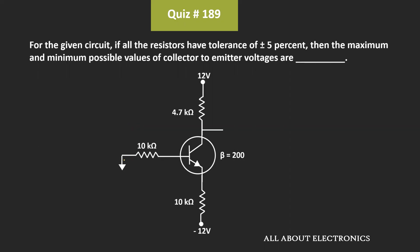Hey friends, welcome to the YouTube channel all about electronics. In this question, we have been given a circuit where all the resistors have a tolerance of ±5%. We have been asked to find the maximum and the minimum possible values of the collector-to-emitter voltage.